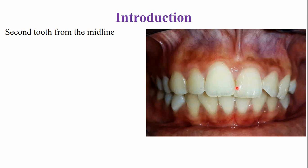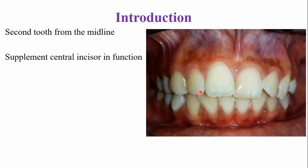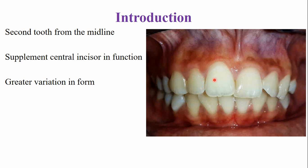The lateral incisor is the second tooth from the midline. Because it resembles the central incisor in shape, it supplements the central incisor in function. The main function of the central incisor is cutting and shearing of food, and the lateral incisor shares the same function. The maxillary lateral incisor shows the greatest variation in form among all teeth, excluding the third molar.